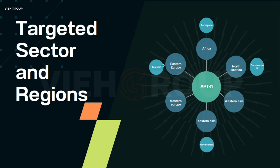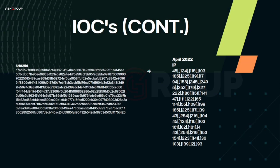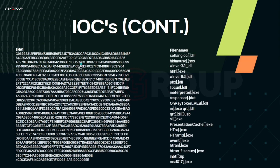The IOCs (Indicators of Compromise) associated with APT10 include SHA1 hashes, MD5 hashes, SHA256 codes, IP addresses associated with the hacking group found during attacks, and specific file names commonly found at the start of attacks initiated by this group.